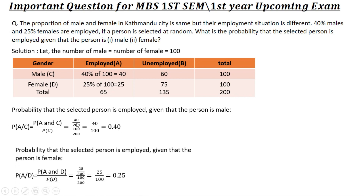Now we find the probability that the selected person is employed given that the person is female, which is P(A|D). P(A and D) = 25 out of 200. P(D) = 100 out of 200. So P(employed | female) = 25/100 = 0.25.